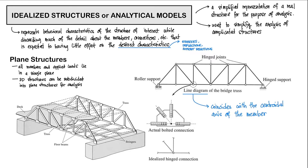So in structural analysis, we will be mainly dealing with two types of structures. The first type is our plane structures, and then the second type is our space structures. Plane structures are structures where all members and applied loads lie on a single plane. The analyses of plane structures are much simpler and less complicated compared to space structures. Fortunately, some 3D structures could be subdivided into plane structures for analyses.